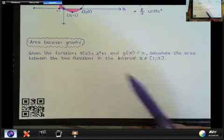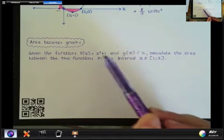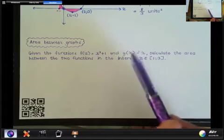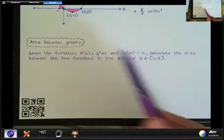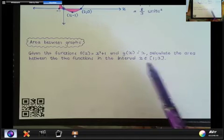So I've written an example down here. It says given the functions f which is x squared plus one, so this is a parabola, and g which is x, so this is the line y equal to x, the straight line graph. Calculate the area between the two functions in the interval x is an element of one to three.